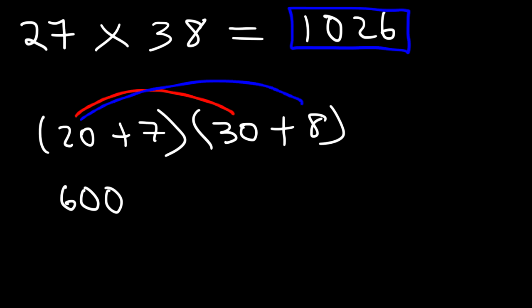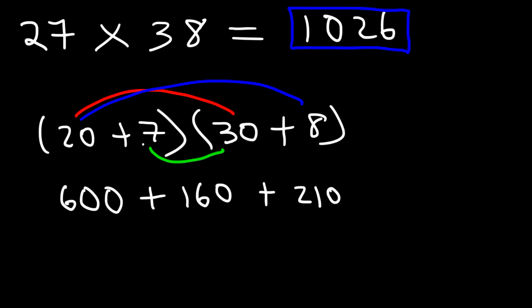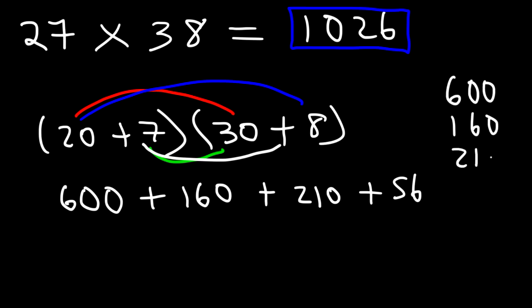Then multiply 20 times 8: 2 times 8 is 16, so 20 times 8 is 160 — just add one zero. Now 7 times 30: 7 times 3 is 21, so 7 times 30 is 210. And 7 times 8 is 56. Now we need to add these four numbers: 600 plus 160 plus 210 plus 56.